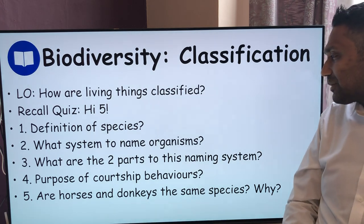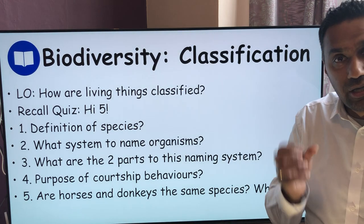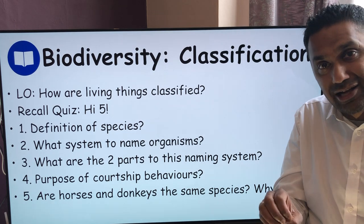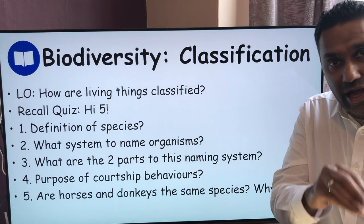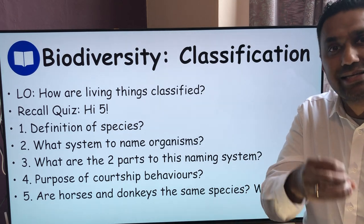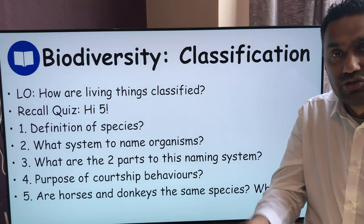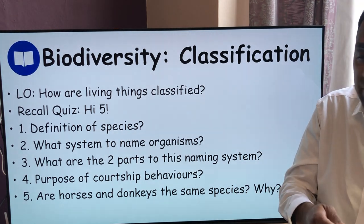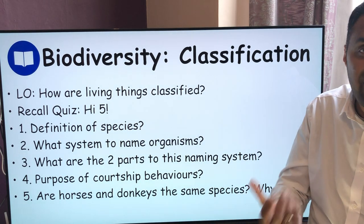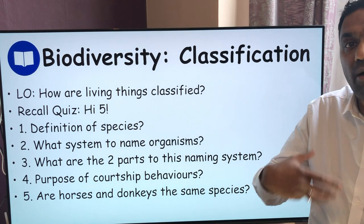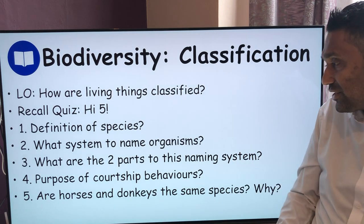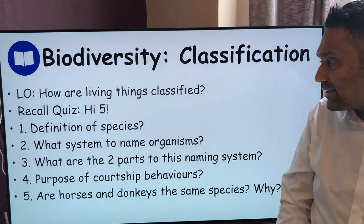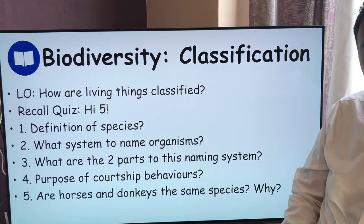Number four: the purpose of courtship behaviours is to form a pair bond, and it's so that you can recognise that the mate is of the same species. If it's the same species, they can reproduce to produce fertile offspring — because if they're not the same species, it'll be pointless having offspring that are not fertile and can't pass on genes from one generation to the next.